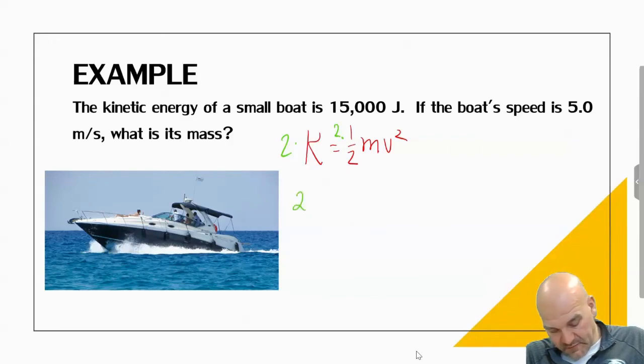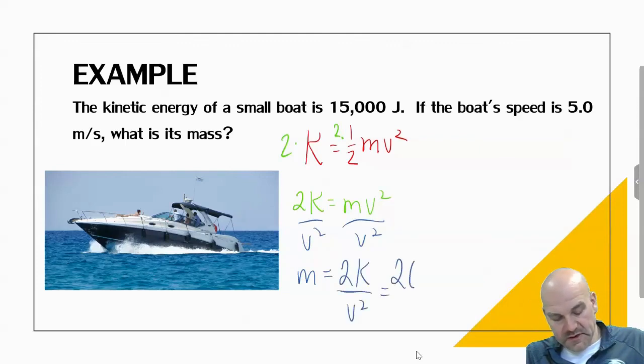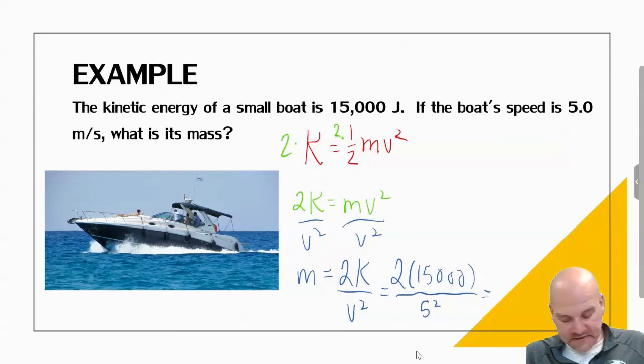So I'm going to divide everything by v squared. So mass is going to be 2 times the kinetic energy divided by the speed squared, or 2 times 15,000 divided by 5² or 25. And it tells me the mass of the boat is 1,200 kilograms.